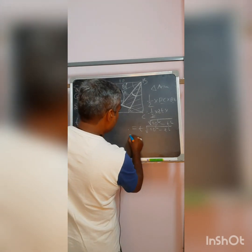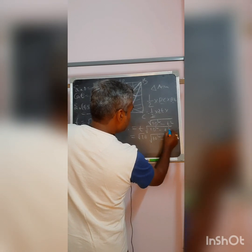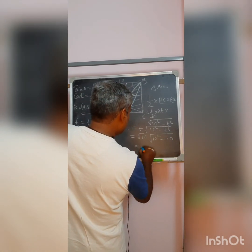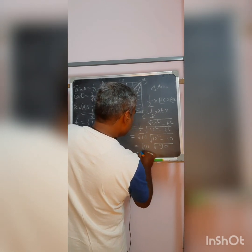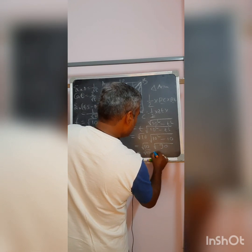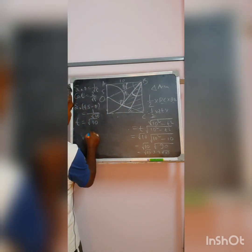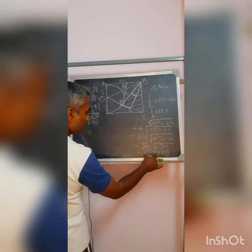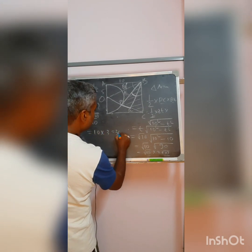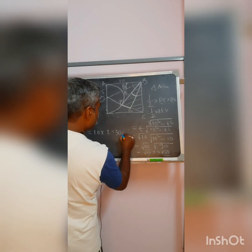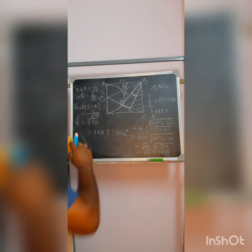Now putting the value T = root 10 into the area formula: BQ equals root of (100 minus 10) equals root 90 equals 3 root 10. So the area equals half into root 10 into 3 root 10, which gives half into 3 into 10, equals 30. So the area of the triangle is 30 centimetre square, as the unit is given in centimetres. Here is your result.